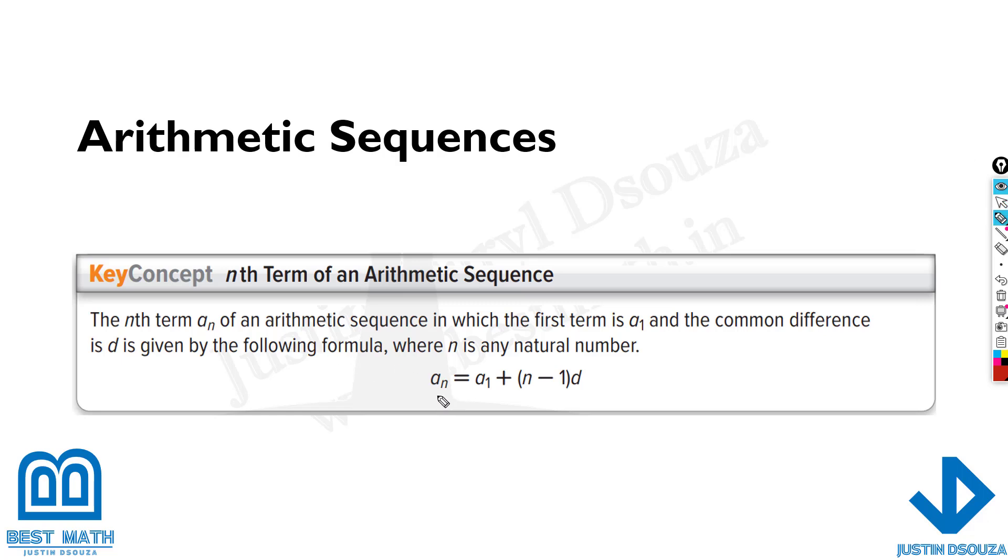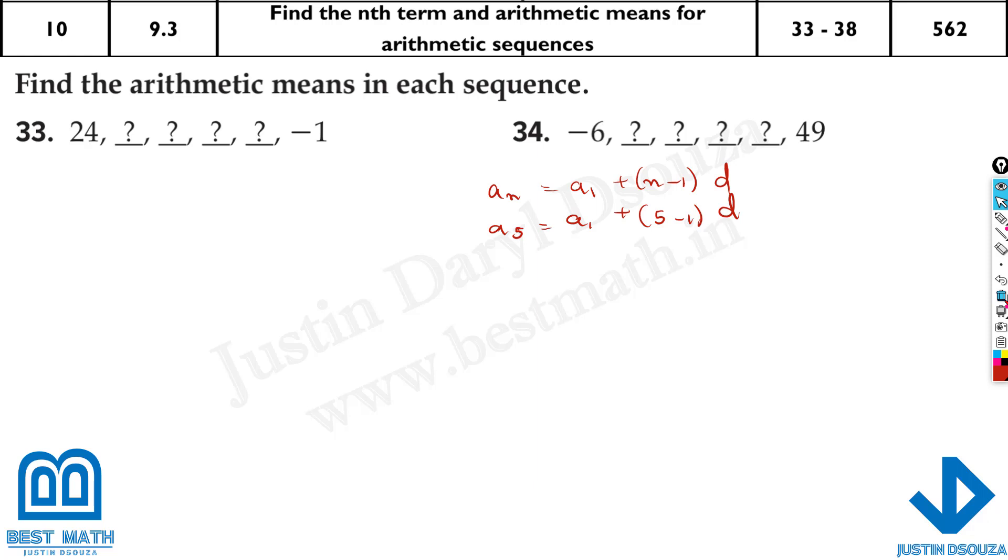This is the nth formula. a_n can be any term. If you want to find the fifth term, then it'll become a_5. And a_1 is always the first term, does not change, plus n minus 1. What is n? That is depending on which term you know. If it's the fifth term, it'll be 5 minus 1 times the common difference depending on the sequence. Now let's look at our problems and see how this formula can be used.